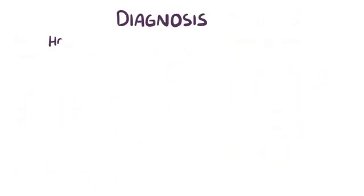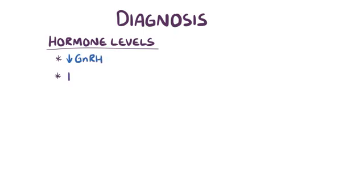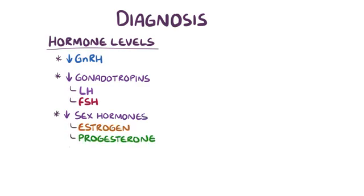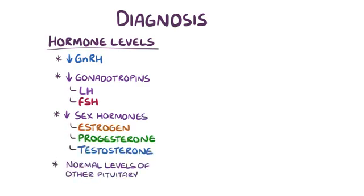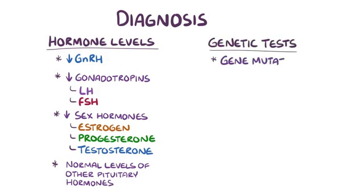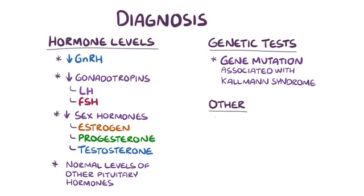A diagnosis of Kallmann syndrome is made based on identifying low levels of gonadotropin-releasing hormone, low gonadotropins — LH and FSH — and low sex hormones: oestrogen, progesterone, and testosterone. And this is all with normal levels of other pituitary hormones. Genetic tests for known gene mutations associated with Kallmann syndrome can also be done. Finally, there's usually an abnormal smell test and sperm count as well.